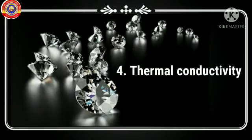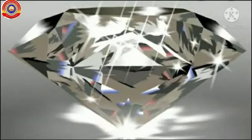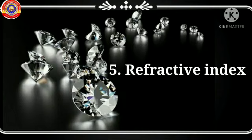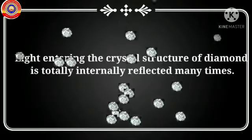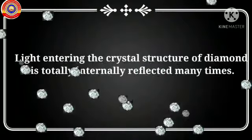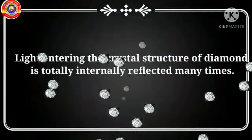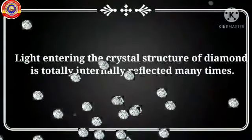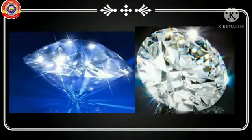The fourth property is thermal conductivity. Diamond is highly crystalline, and this crystalline structure gives it high thermal conductivity compared to other materials. Next is refractive index: light entering the crystal structure of diamond is totally internally reflected many times, giving it a very high refractive index. As light passes through, it gets separated into its component colors due to total internal reflection, making diamond more attractive.